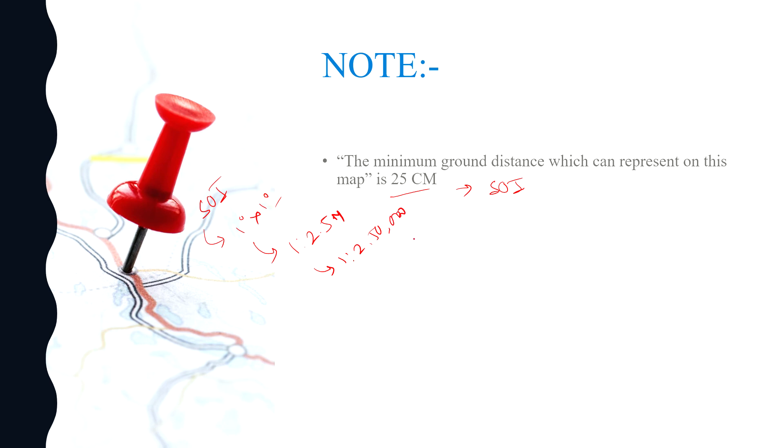For that, the minimum ground distance becomes 2.5 million multiply 25 cm.